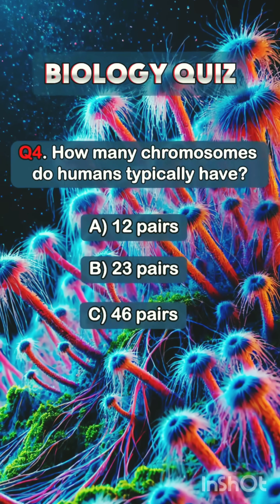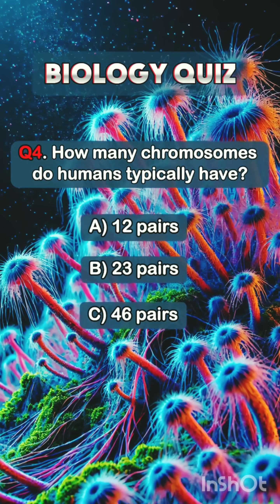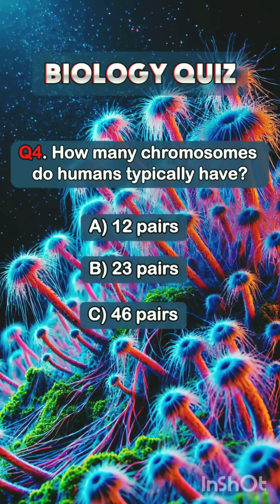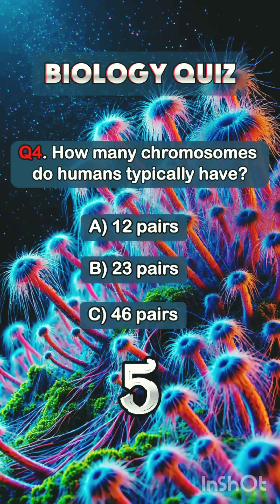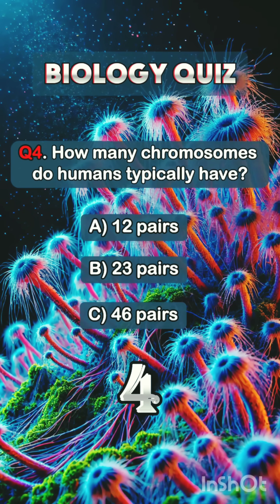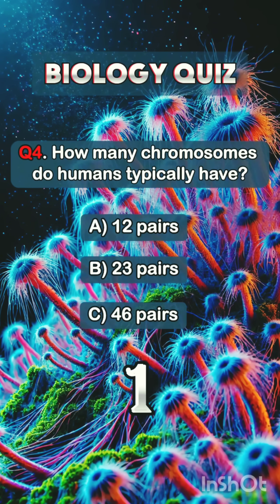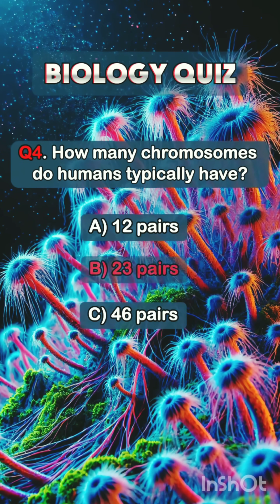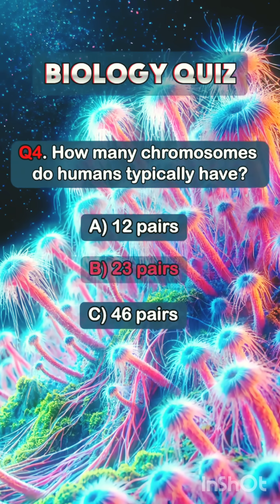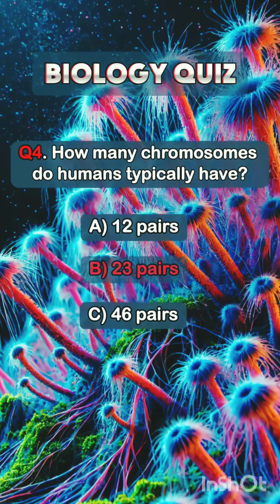Question 4. How many chromosomes do humans typically have? Answer B: 23 pairs.